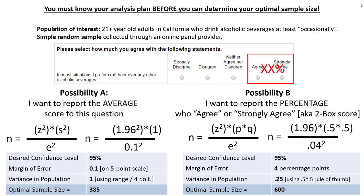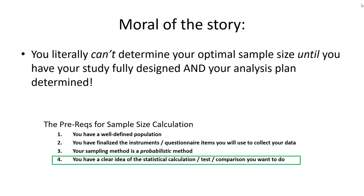I'm not saying one approach is better than the other just because the optimal sample size calculation differs, but rather I'm illustrating that you have to know your analysis plan for a variable before you can determine the right sample size. The moral of the story: you literally cannot determine your optimal sample size until you have your study fully designed and your analysis plan determined.